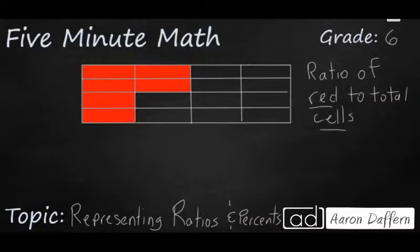So that seems pretty simple. We'll put our ratio over here, and we're going to count our red cells. We have 1, 2, 3, 4, 5, 6 cells, and then a total number of cells, and that's going to be 16. So our ratio would be 6 to 16.